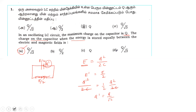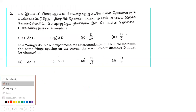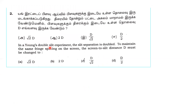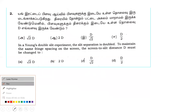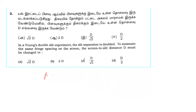Second question: in a double slit experiment, the slit separation is doubled. To maintain the same fringe spacing on the screen, the screen-to-slit distance D must be changed. The fringe width beta is equal to lambda times capital D divided by small d.